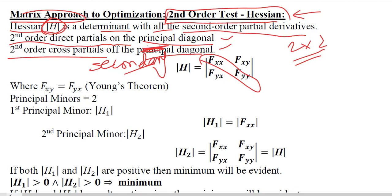And the secondary diagonal has the second-order cross partial derivatives in it.